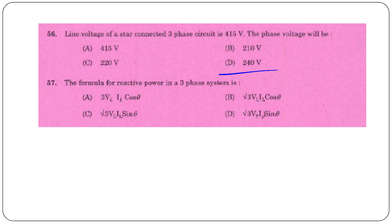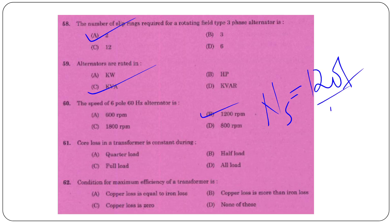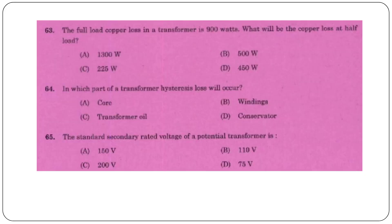The catalyst used in a reducing converter is rhodium. Engine RPM/speed is checked using a tachometer. Engine temperature gauges are immersed in water. Important pollutants of the engine are hydrocarbons, carbon monoxide, and nitrous oxides. Line voltage of a star-connected 3-phase circuit: 450V line, 240V phase. Reactive power formula in a 3-phase system: √3 × VL × IL × sin θ. Number of slip rings required for a rotating field type 3-phase alternator is 2. Speed of a 6-pole 60Hz alternator: NS = 120f/P = 1200 RPM. Core loss is constant during all loads.